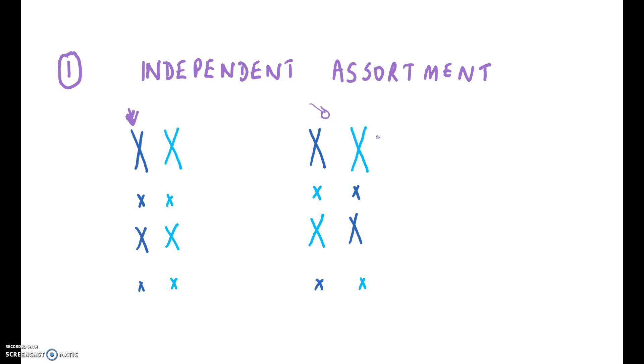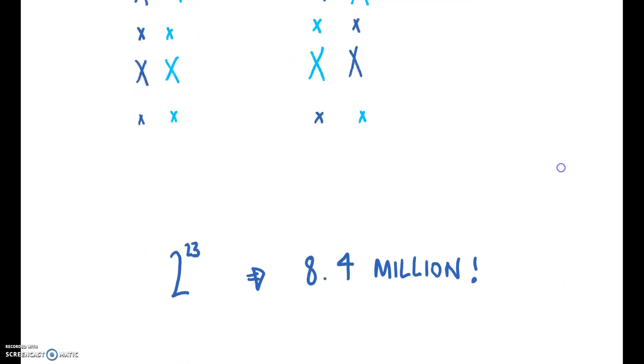Now when you're making gametes, half of your chromosomes come from your mother and half of them come from your father. So in each chromosome pair you have a maternal chromosome and a paternal chromosome. You could make gametes that were made solely of maternal or paternal chromosomes, but much more likely is you will have a mixture.